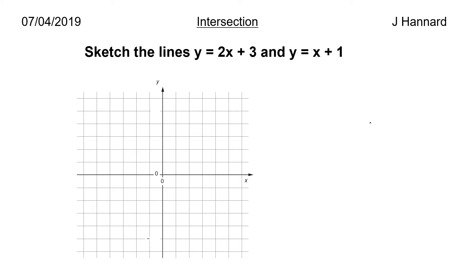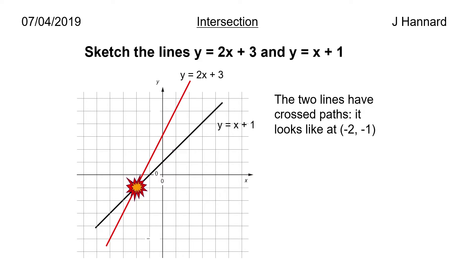First of all, sketch the lines y equals 2x plus 3 and y equals x plus 1. So we get our first line, that's going to be y equals 2x plus 3, and we get our second line y equals x plus 1. As you can see there is an interesting point here where they've connected and we're interested in that point. They've crossed paths and it looks like it's at about minus 2, minus 1.